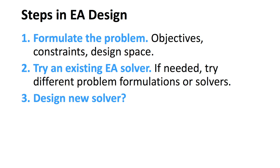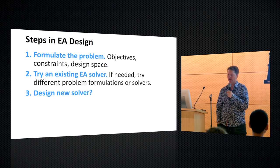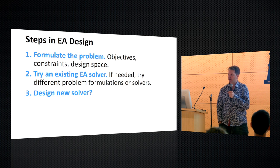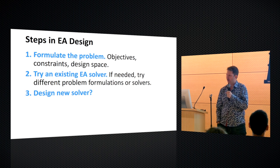When you're designing an evolutionary algorithm and you've graduated from the ad hoc approach, there are really three steps. First, you formulate the problem: the objectives, the constraints, and the design space. This is common across the board, not just evolutionary algorithms, but a much broader class of optimization problems. Objectives are things you try to maximize or minimize. Constraints are things you have to meet. Design space is what you can explore. Then you try to use an existing solver — for multi-objective problems, you might use NSGA-II. You try not to reinvent the wheel. If you're lucky, you can cast it as a convex optimization problem, which you can solve in polynomial time.